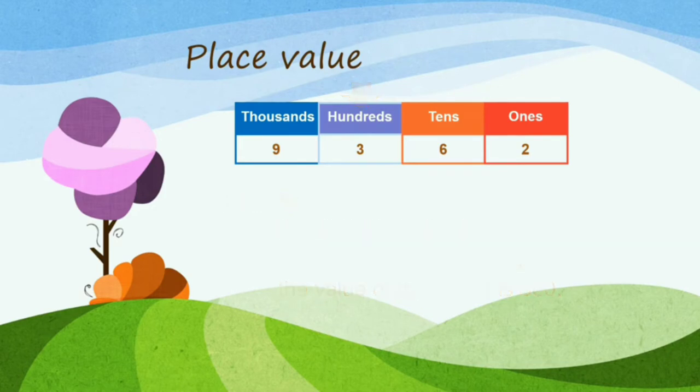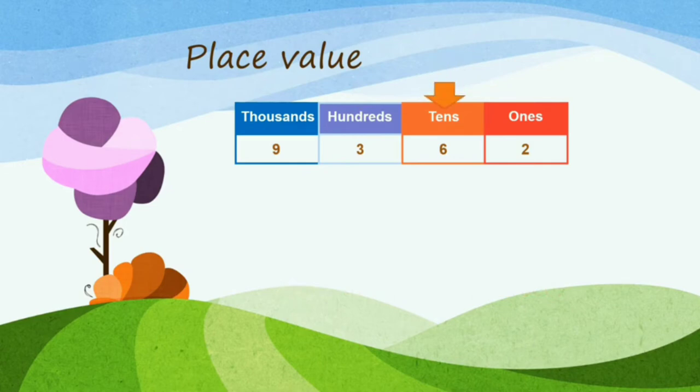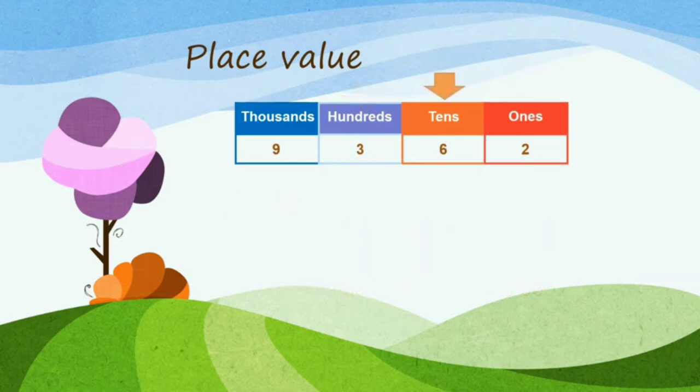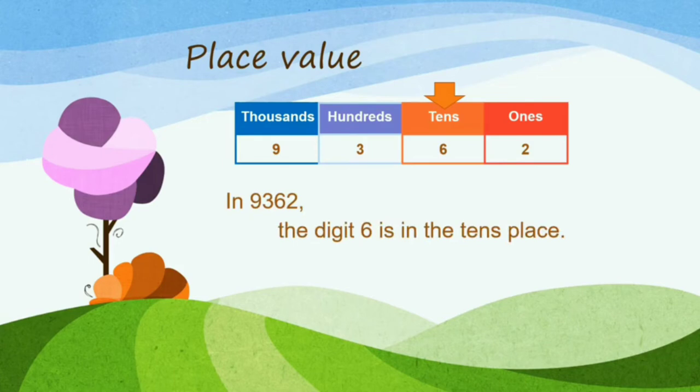Well, everyone, we have the digit 3, we have number 6 here. It is 4. The digit 6 is in the 10th place. The digit 6 stands for 60. The value of 6 is 60. Alright? You got the point for digit 3? It is for number 6.